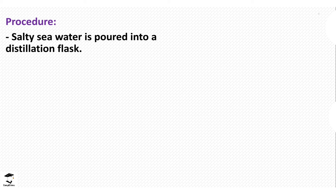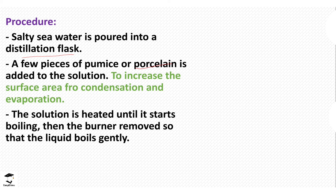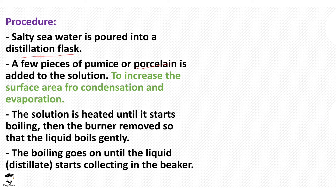We put the sea water in a distillation flask and add a few pieces of porcelain — these can also be called pumice — which are small broken pieces added to increase the surface area for evaporation and condensation. The solution is then heated, and when it starts to boil we begin collecting the distillate — that is the name for the solution that is collected.